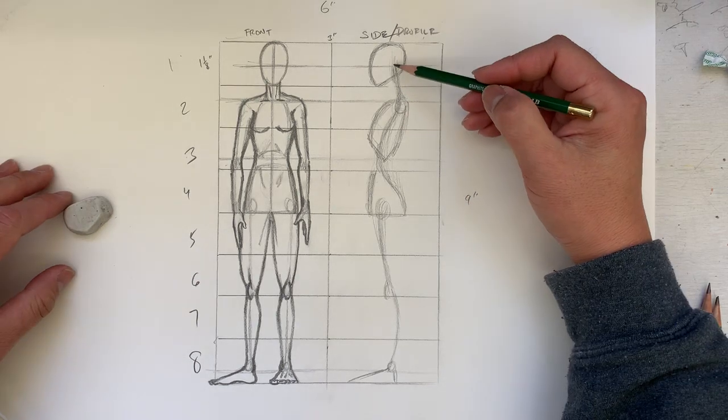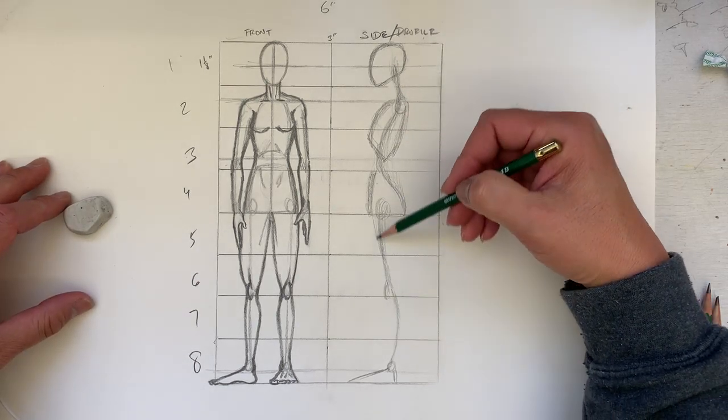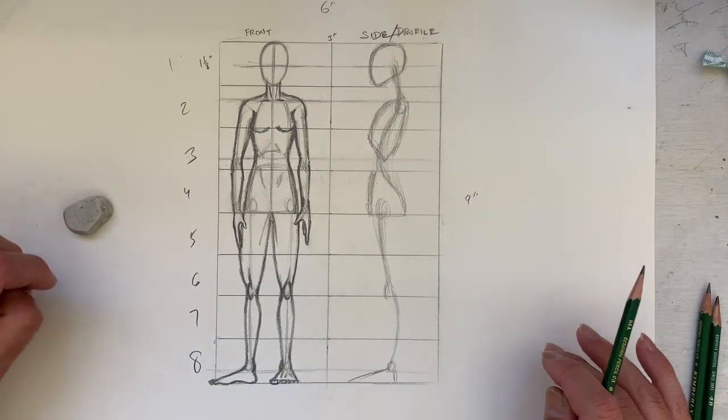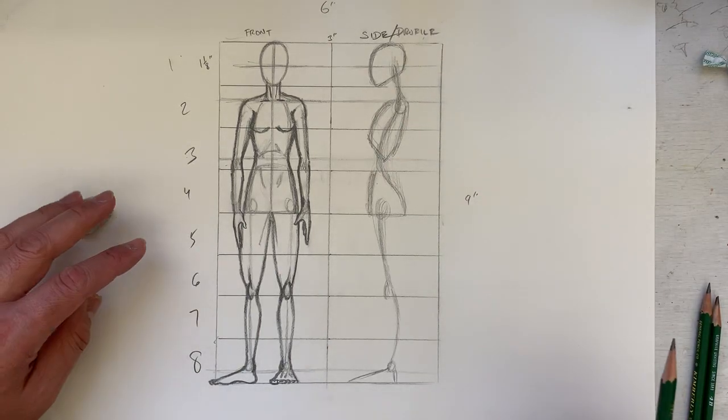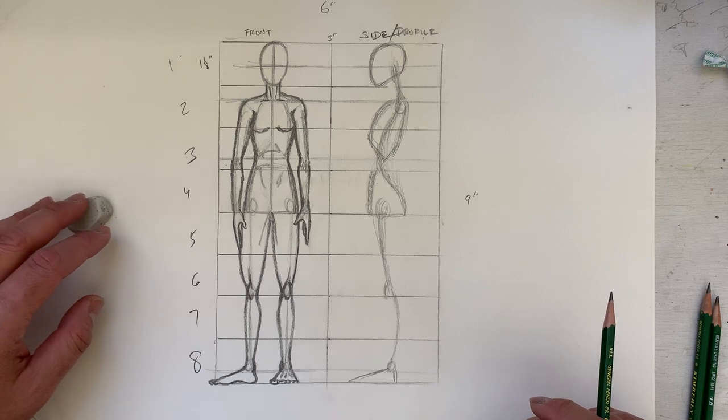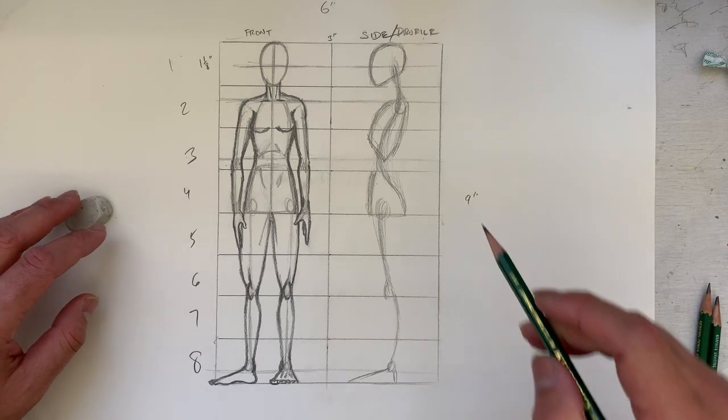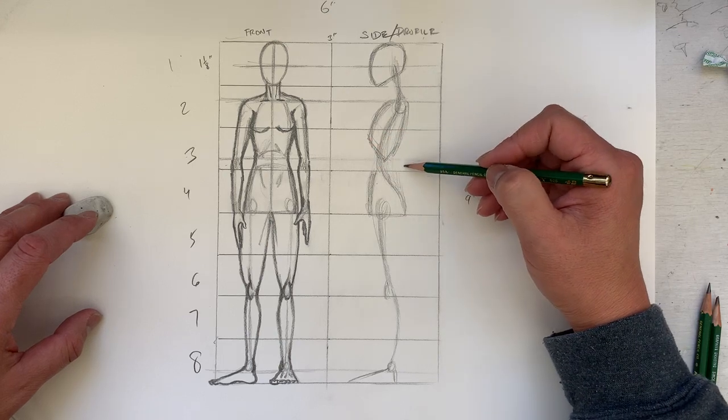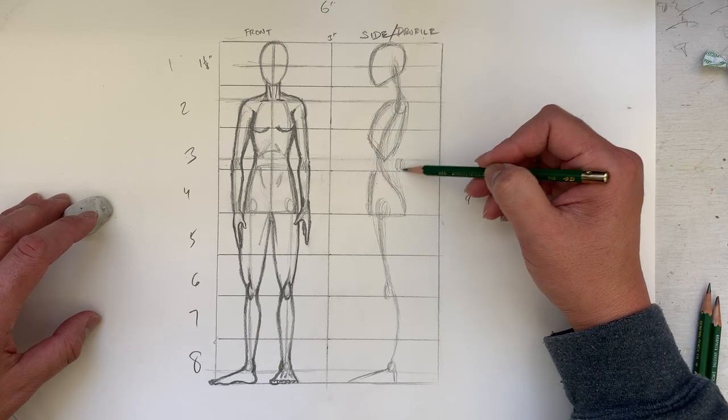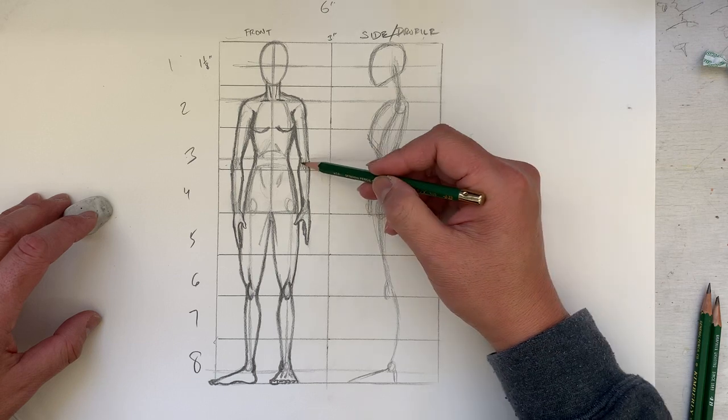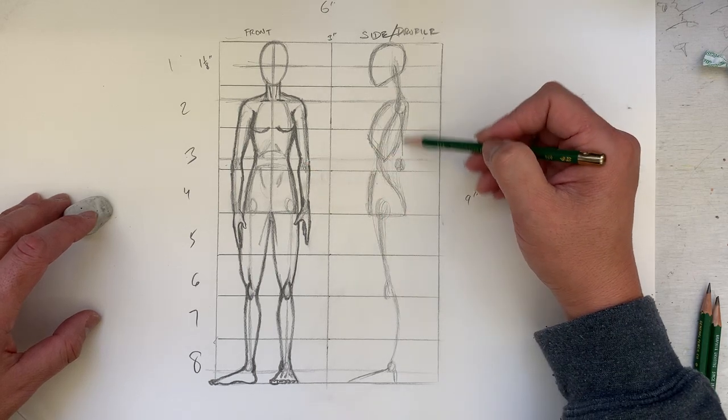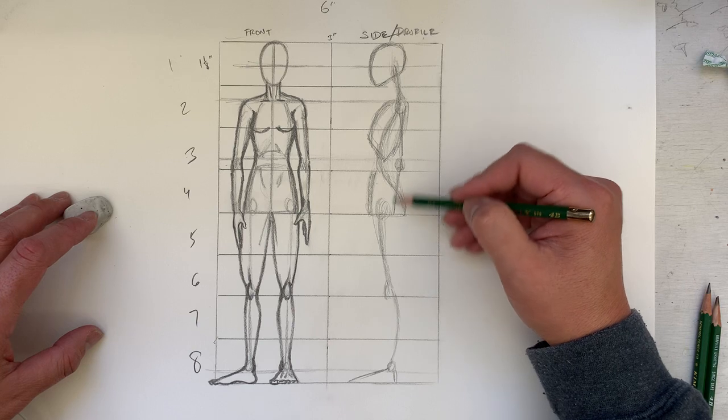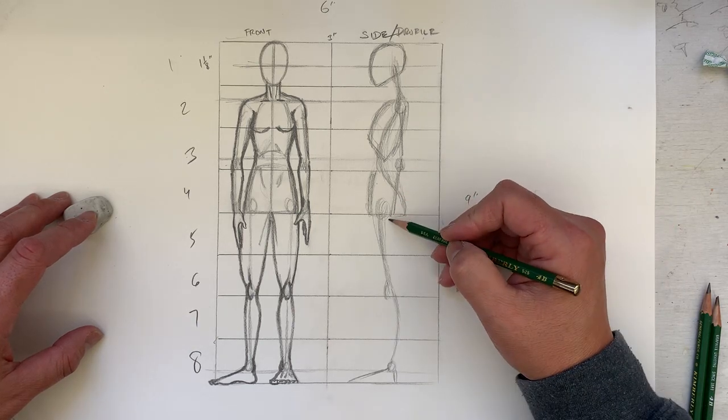Notice how we have this line going all the way kind of down here. On in box three near the bottom, we're going to put our elbow coming from the shoulder down, down to the hand.